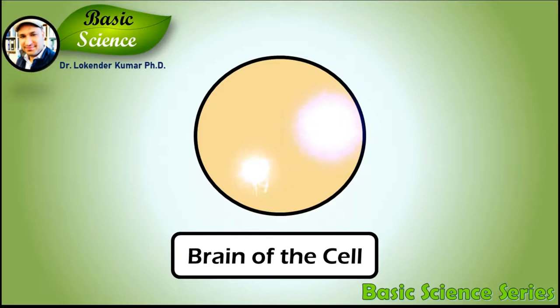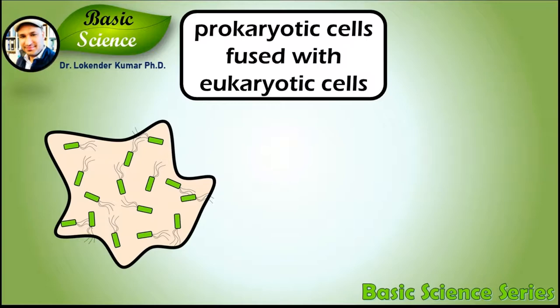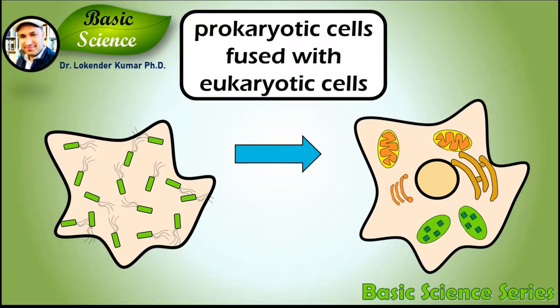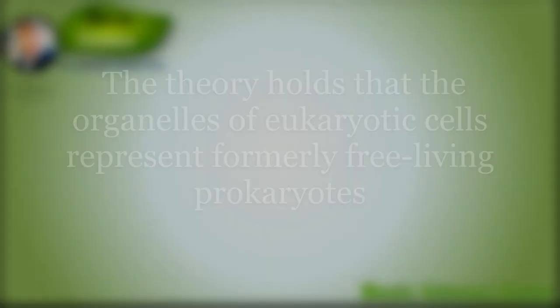Researchers believe that these organelles originated because prokaryotic cells fused with eukaryotic cells and became an integral part of the eukaryotic cell. There are interesting proofs provided in support of this hypothesis. We are going to discuss those evidences in detail, so please stay tuned to understand the theory of symbiogenesis.